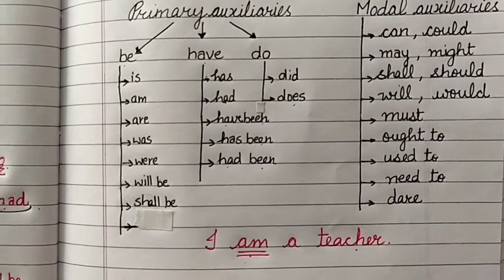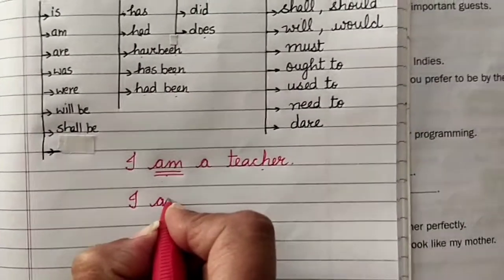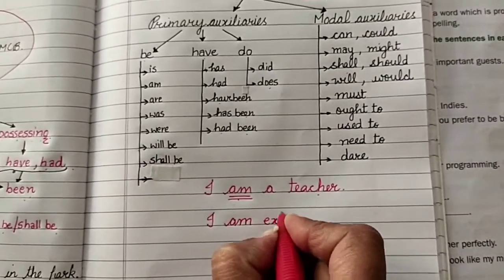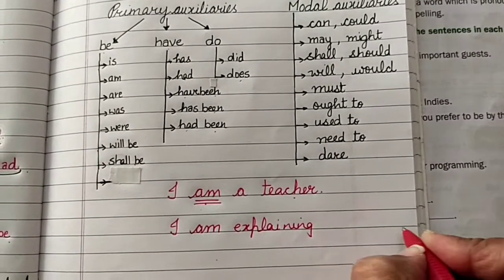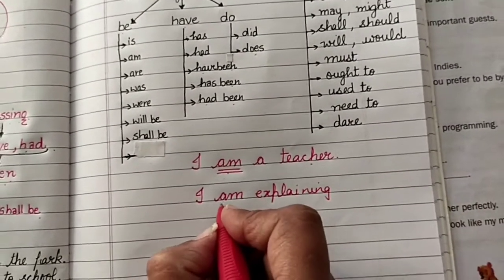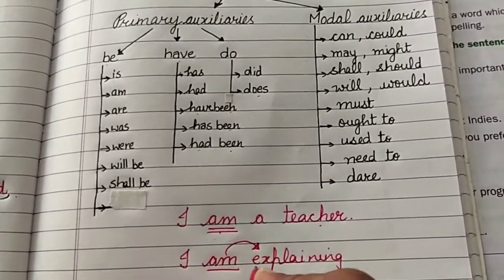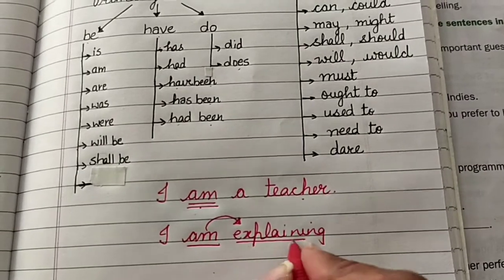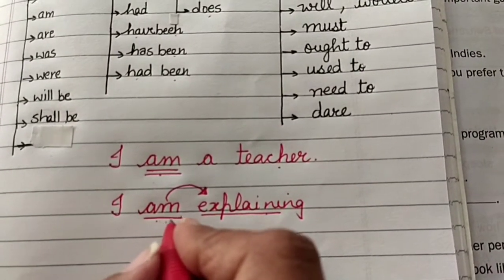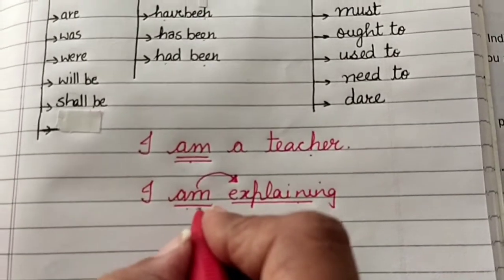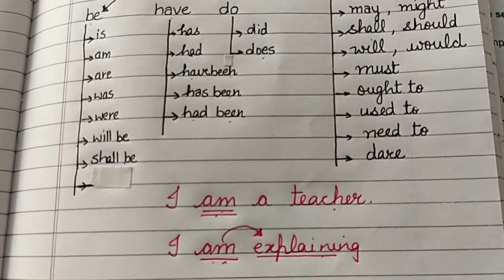Of course, in the present continuous tense if I say I am explaining the topic of auxiliaries right now. So here am is working as a helper to the main verb explaining. So here it is primary auxiliary only because it's a helper here. But they can exist on their own. That is why it's called primary auxiliaries.